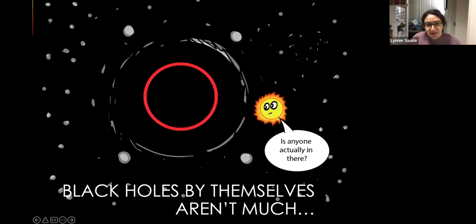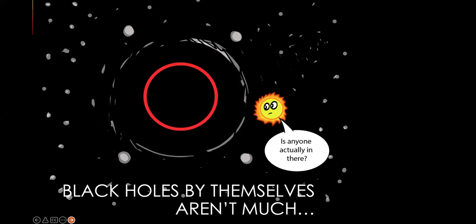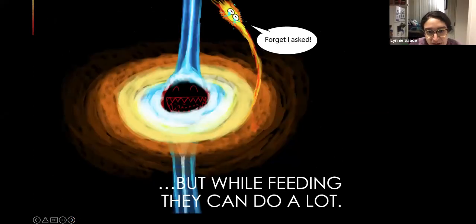So black holes by themselves aren't very much of anything. Like I said, they're empty space time. And it's actually been proven through mathematical theories that a black hole is only distinguished from another black hole by like three parameters: its mass, its electric charge, and its rotation. And so black holes basically have like no attributes by themselves. They're all pretty much almost identical to each other and they don't really do much by themselves.